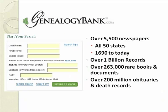Genealogy Bank has over 5,500 newspapers, going over 6,000 this month. It covers all 50 states and dates back to 1690, right up to the present. There are also over 263,000 rare books and documents. All of this boils down to over 200 million obituaries. It's quite staggering — it's very likely that you're going to find your people.